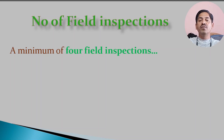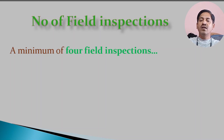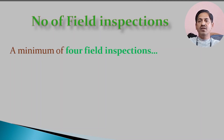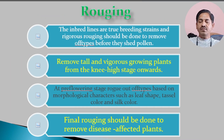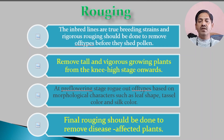In the case of field inspections, while open pollinated varieties required a minimum of two field inspections, for hybrid seed production you need four field inspections. The most important practice during inspection is roguing to maintain the genetic purity of the seed.